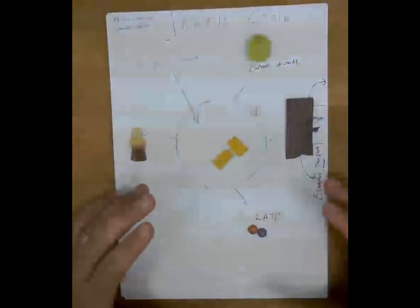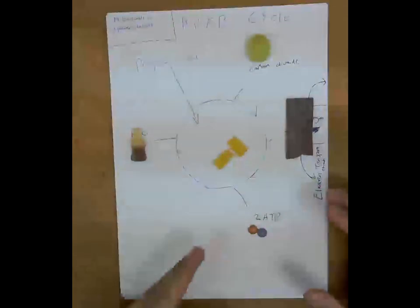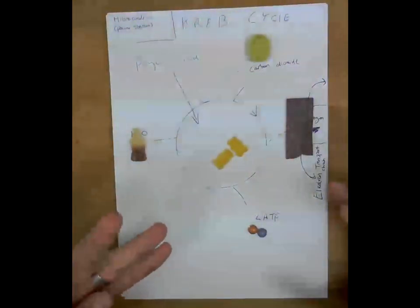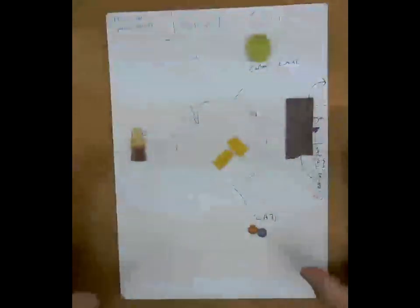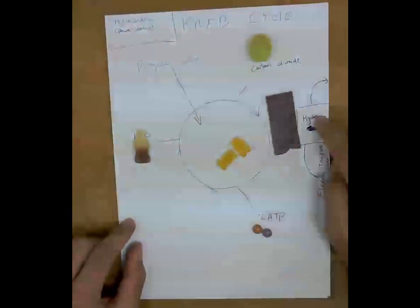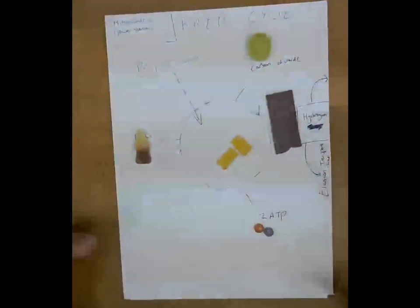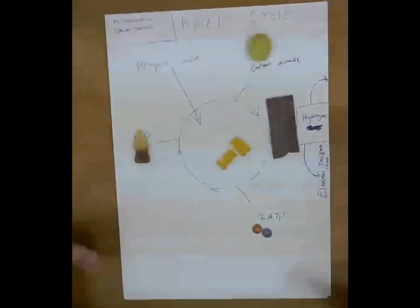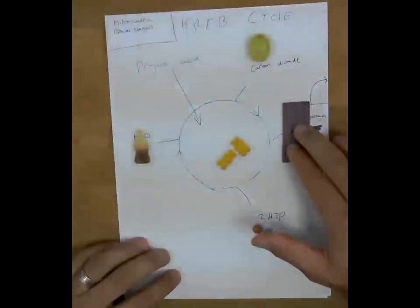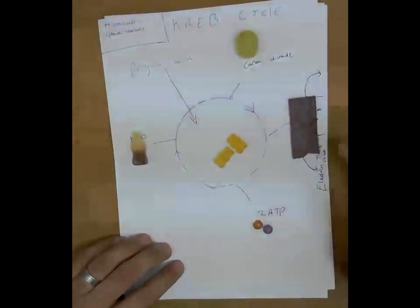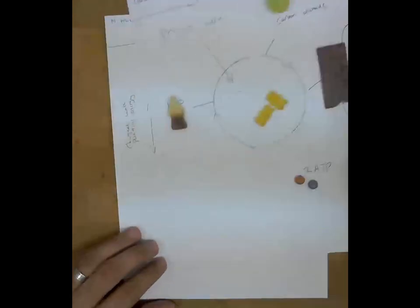So at this stage, we've got two from the first section, two from the second stage, this section here. So we're up to four so far. So obviously so far, it's created the most ATP out of any of our energy systems. But what then happens is our hydrogen gets transported by something called the electron transport chain. And the hydrogen is carried by hydrogen carriers. So the hydrogen carriers take the hydrogen molecules to the electron transport chain.